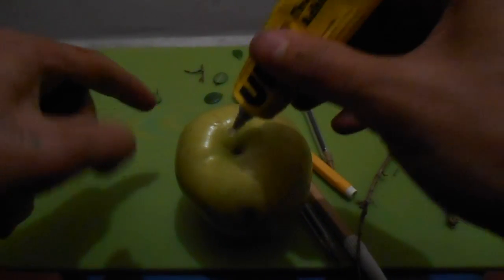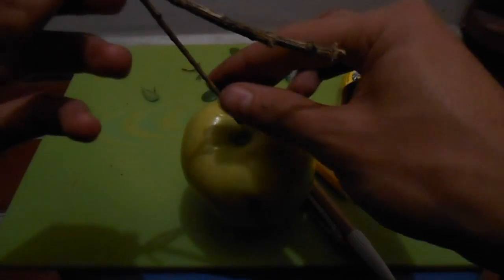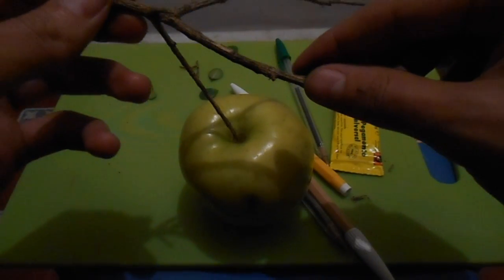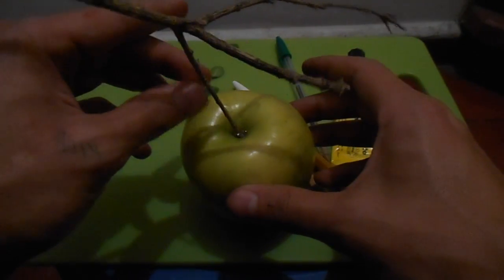Now we're going to add glue. Now we're going to use a branch. You can use any branch of any tree you like. The preference is a small one. We paste it.